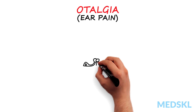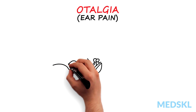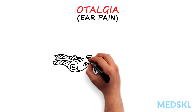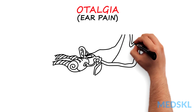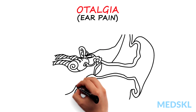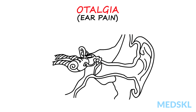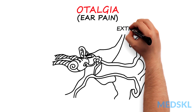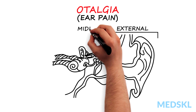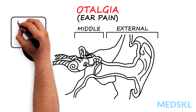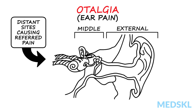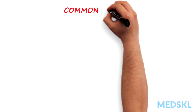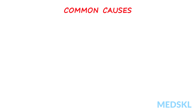Otalgia, or ear pain, is a complex diagnostic challenge due to the numerous local conditions that can trigger it, as well as the multitude of near and distant sites that can refer pain to the ear. The way I approach ear pain is to classify it as arising from the external ear, the middle ear, or from distant sites causing referred pain. Here are some common causes of pain under each heading that you should always consider.